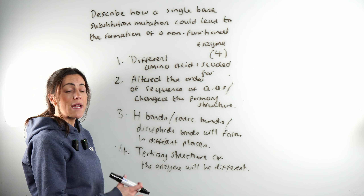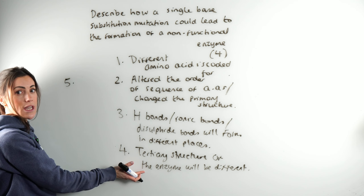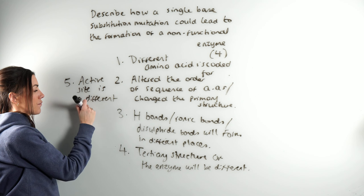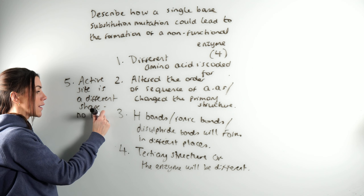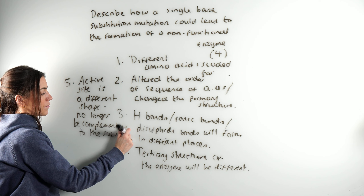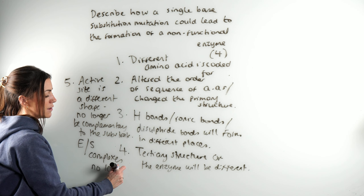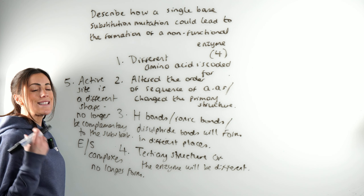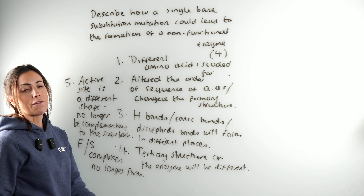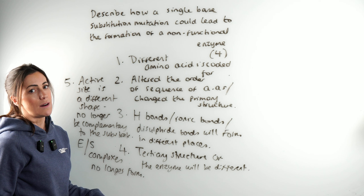We've probably got four marks already, but let's finish it off. With it being an enzyme, if the tertiary structure is now different, then the active site is a different shape. It's important to say it will no longer be complementary to the substrate, or even better, that enzyme-substrate complexes no longer form. If ever you get an enzyme question, check your answer: have I used the word 'active site'? Have I used 'tertiary structure'? Have I said 'enzyme-substrate complexes'? Use that as a little checklist.